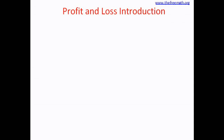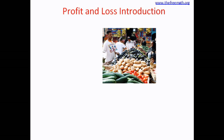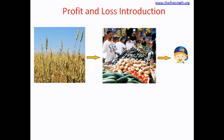Let's learn about profit and loss. These words are mainly used in businesses — that's where we typically hear them. Let's look at this picture: this is a vegetable seller, a shop owner who is selling vegetables. What happens is shop owners buy vegetables from farmers and then sell them to us.